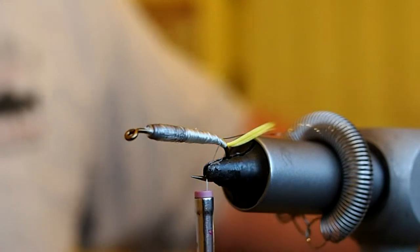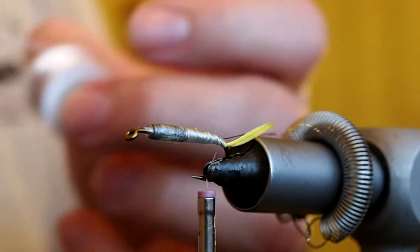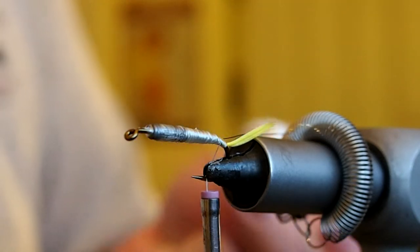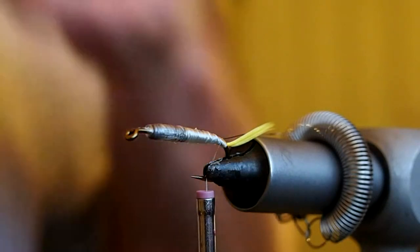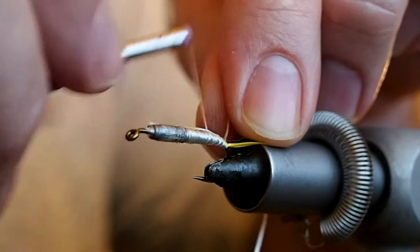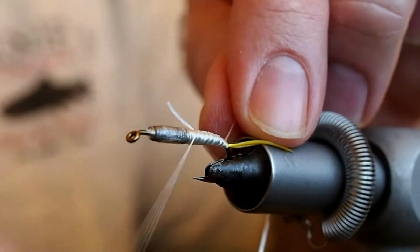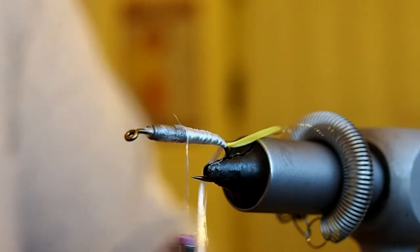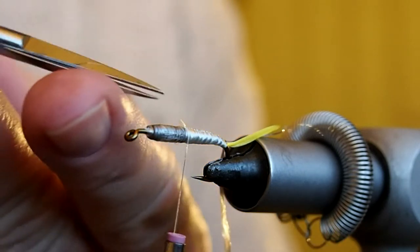And for the body, we're going to use some white floss. Get some white floss here, and I'm just going to pull off probably about a foot of that. I like to tie that in at the butt, but bring the tag up towards the front of the fly, just so we have a nice even body. And then trim our tag.